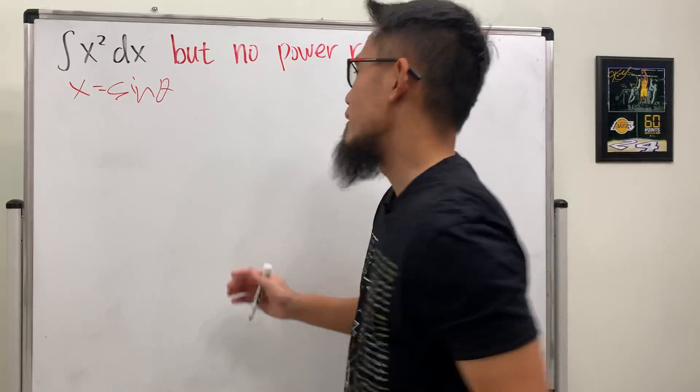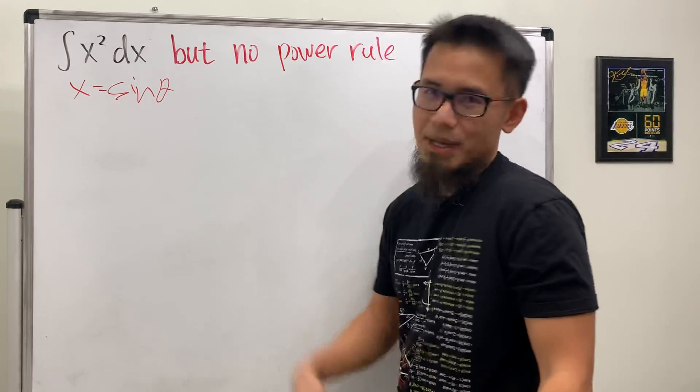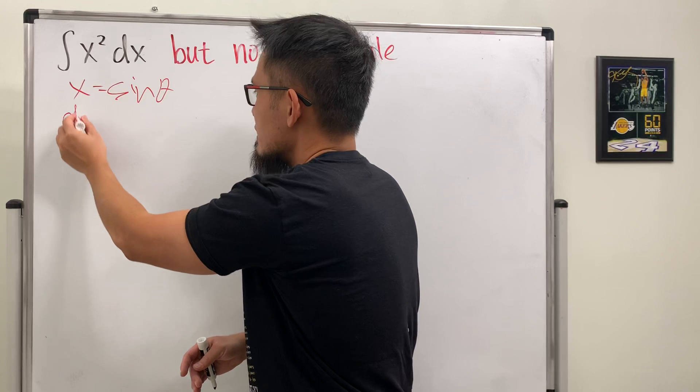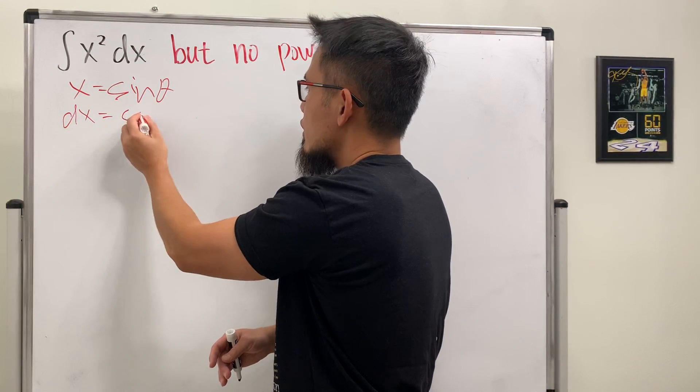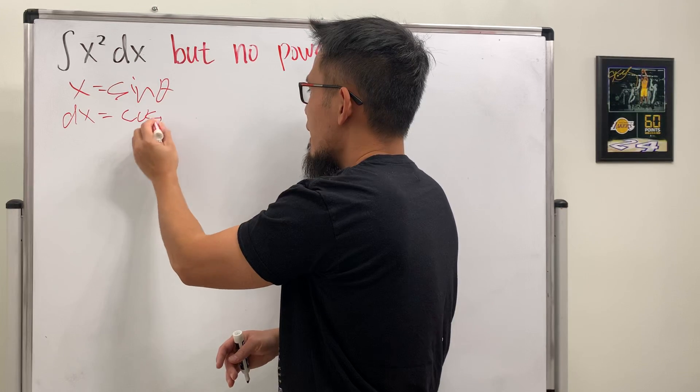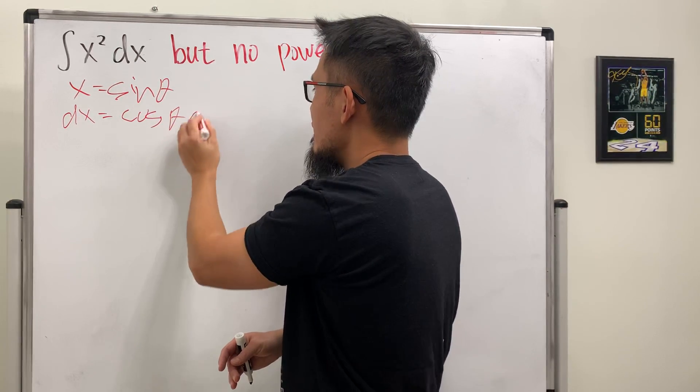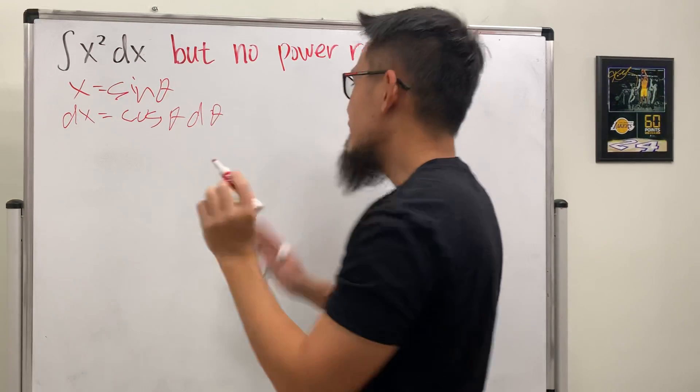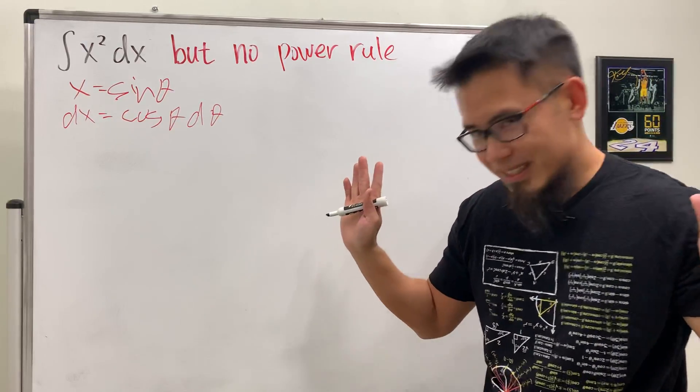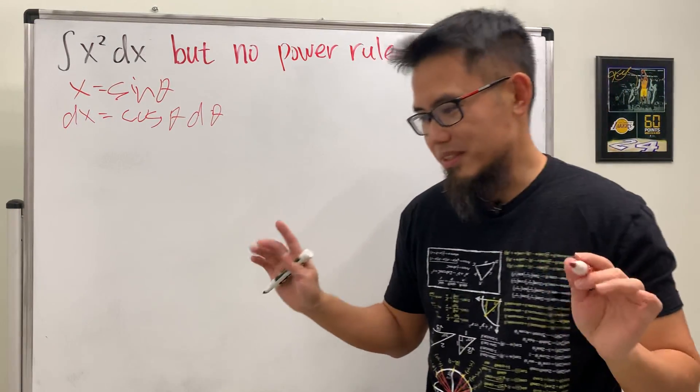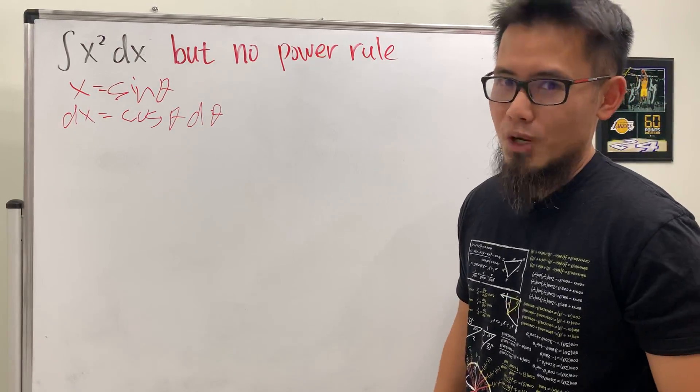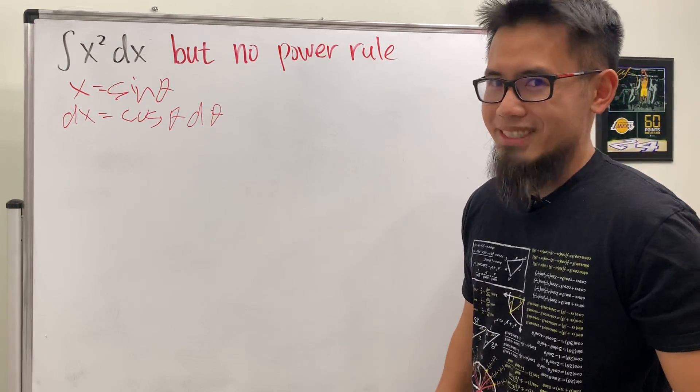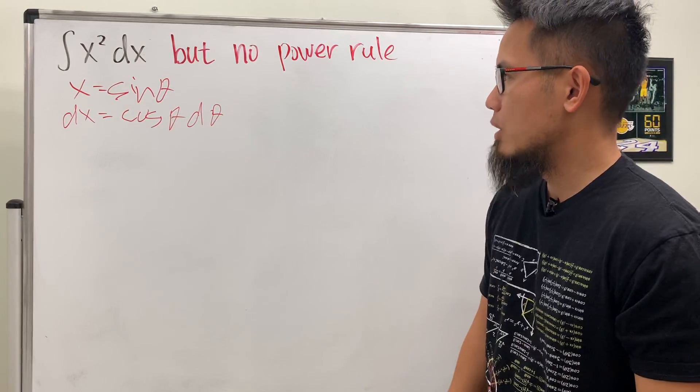This is so bad now I know, but I will continue. Let's go ahead and do our usual business. dx is equal to the derivative of sine, which is cosine theta d theta. And I'm not going to cut this video. This is the only take, so you will see if it works or not.